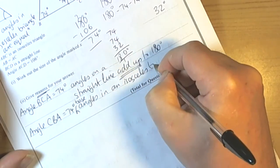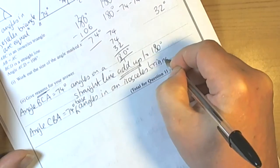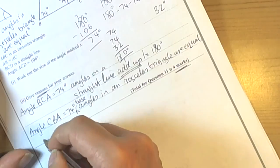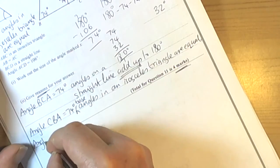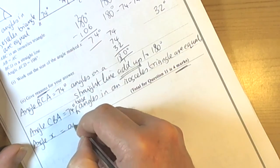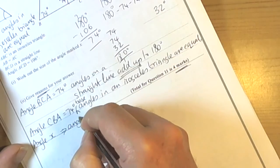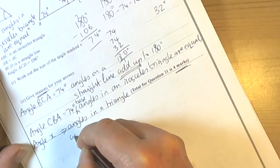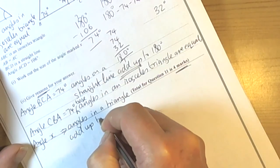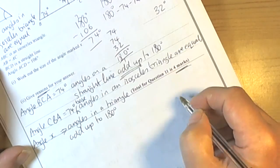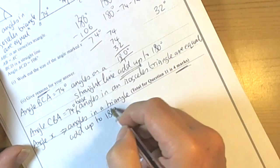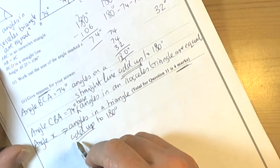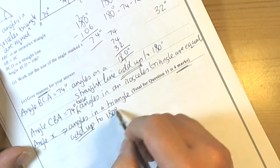And then we can just say that angle X, and we can say that we used angles in a triangle add up to 180 degrees. Again, it's really important we use these words add up to. Don't say angles in a triangle equal 180. We've got to use those words add up to.